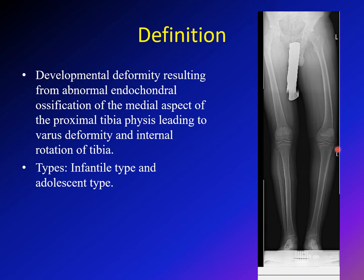The physis, or growth plate, has its proximal medial part not growing as it should. There is still growth from the lateral side, so with growth on one side and lost growth on the other, you develop the varus deformity. In most cases, there is also associated internal tibial torsion.